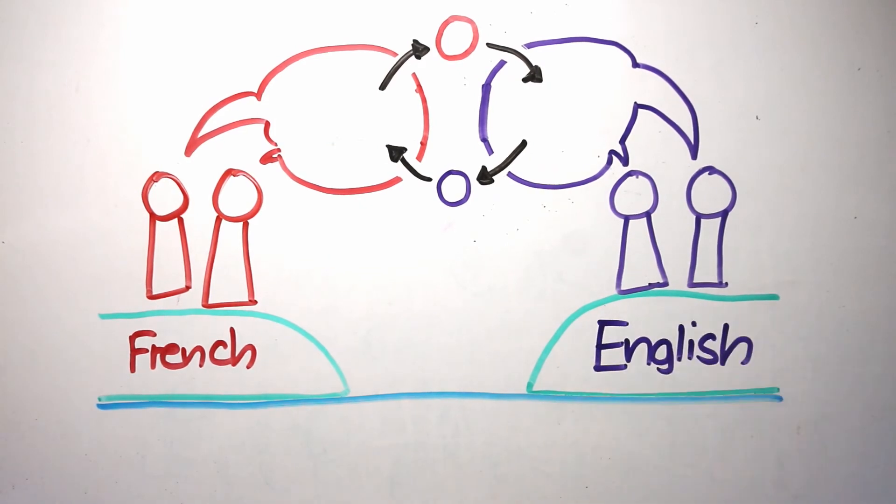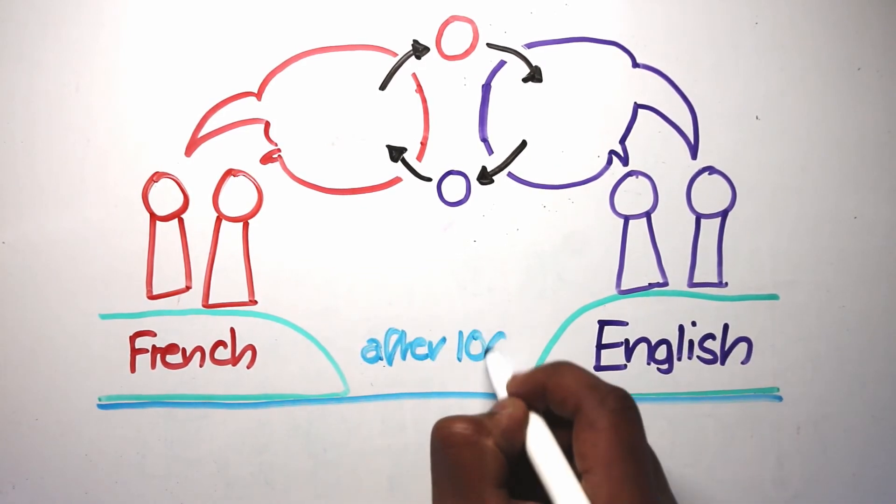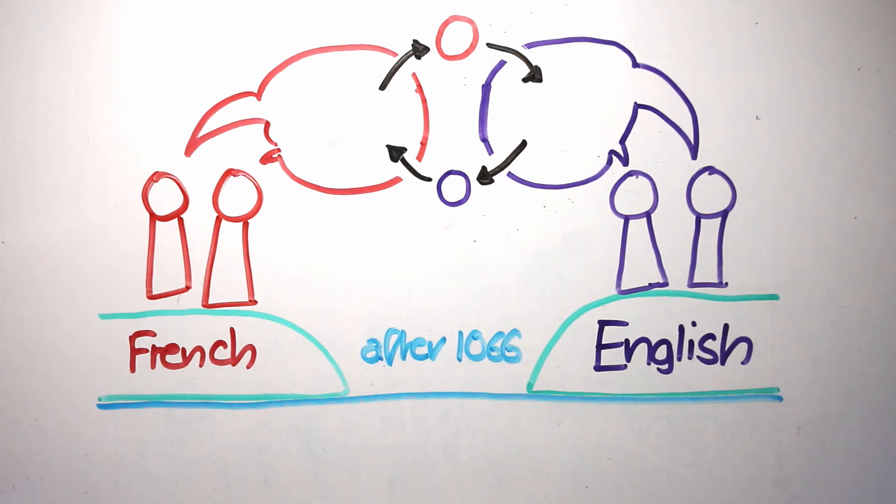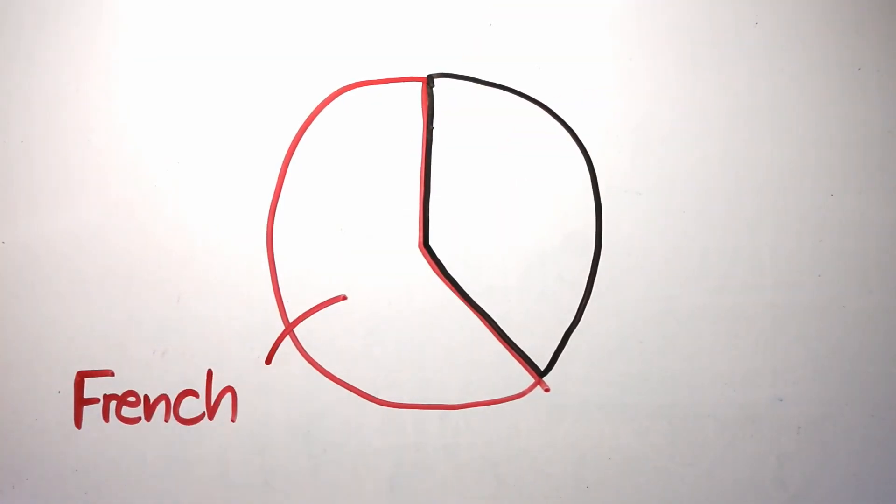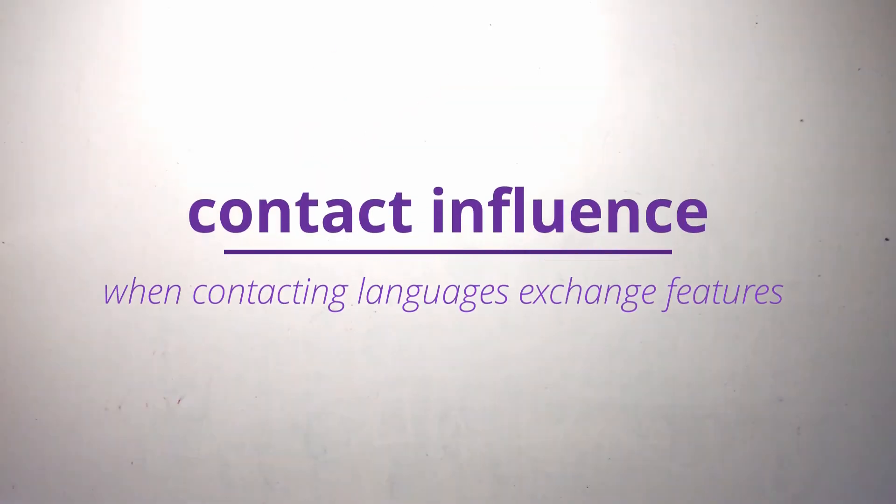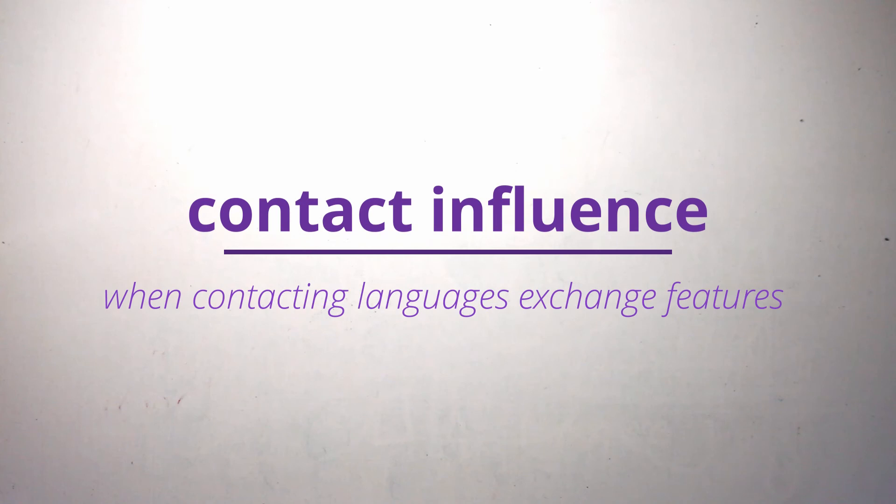With English and French, this happened a lot after the Norman Conquest. English borrowed words for all sorts of meats from French, like beef, pork and mutton. Today, loanwords from French make up more than half of all modern English words, making them very similar in their vocabularies. This sort of similarity is from contact influence, and is very different from the genealogical relationship that we saw before.